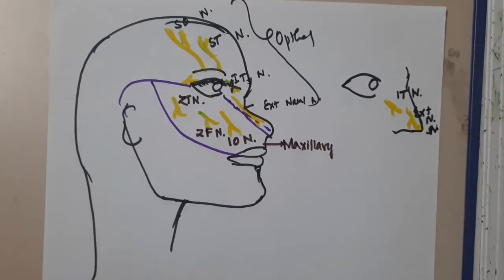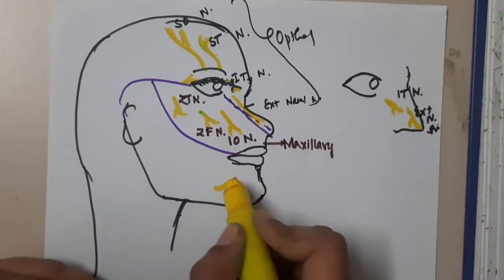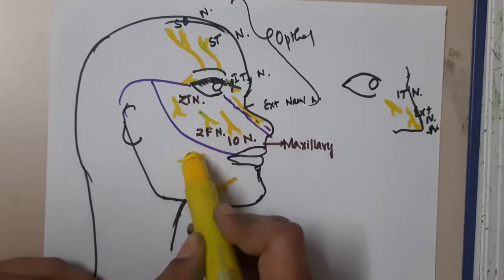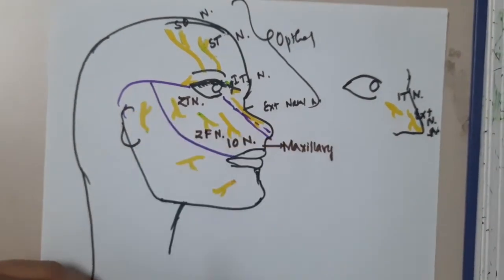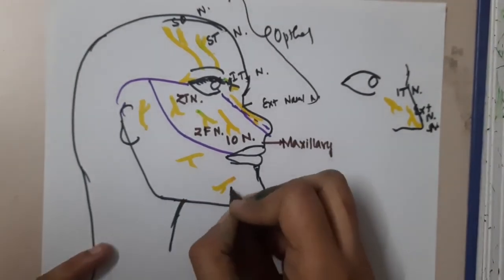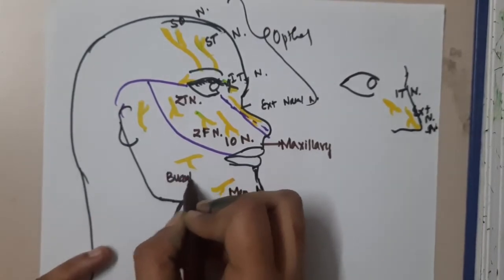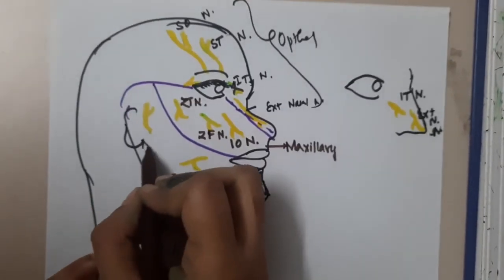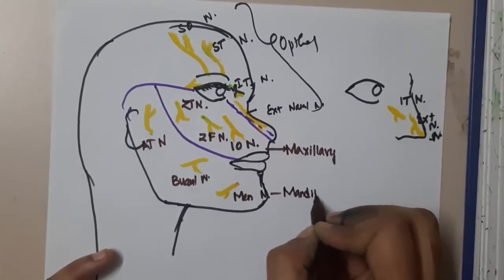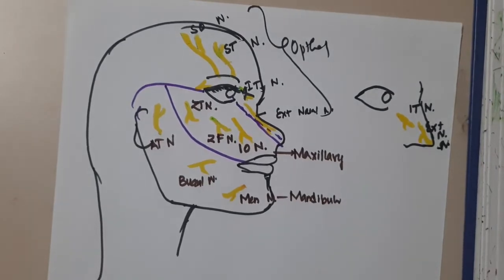For the mandibular division of the trigeminal nerve, we have the mental nerve which passes through the mental foramen, the buccal nerve, and the auriculotemporal nerve.